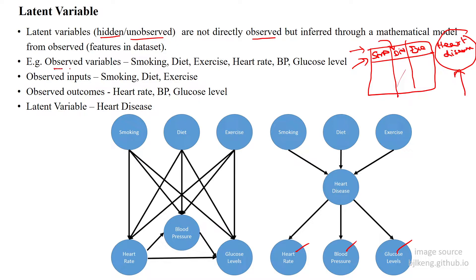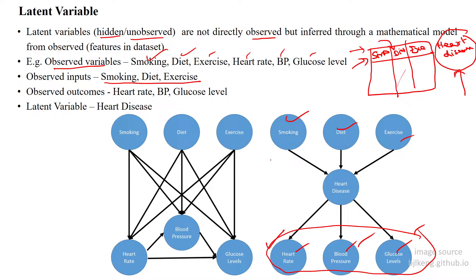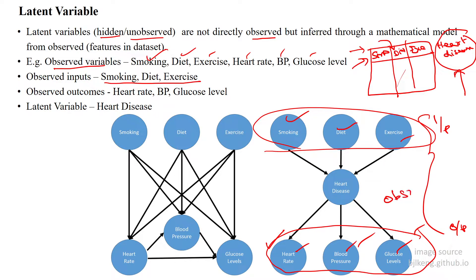The observed variables are smoking, diet, exercise, heart rate, blood pressure, and glucose level. Smoking, diet, and exercise are the observed inputs. From these inputs we can identify heart rate, blood pressure, and glucose levels — these are affected by those habits. So smoking, diet, and exercise are observed inputs, while heart rate, blood pressure, and glucose are observed outputs. Together, both are called observed variables.